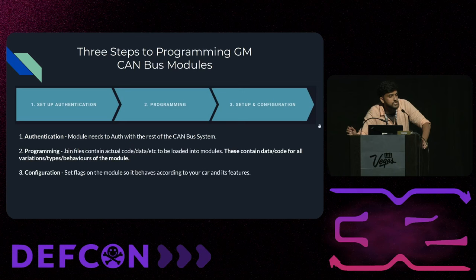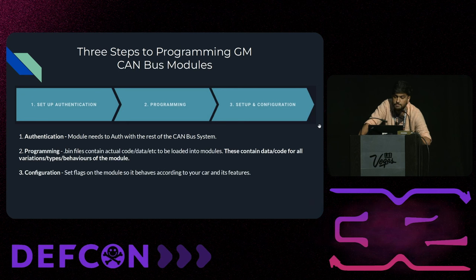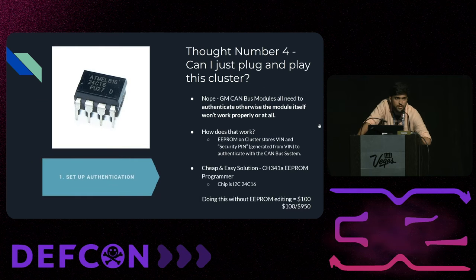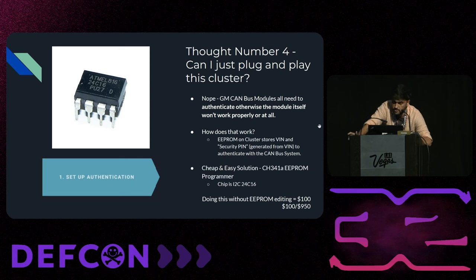Those three questions actually relate to the three steps of CAN bus module programming in GM. First, you have to configure authentication. Then programming for the general-purpose firmware and software. And then setup and configuration to set the config flags according to what your car has. So the first thing — can I just plug and play this cluster? No. You have to make sure the cluster can authenticate with the rest of the CAN bus, and it does that with two specific pieces of information: the VIN number and the security pin, which is derived from the VIN number.